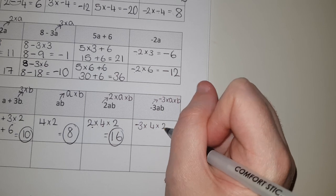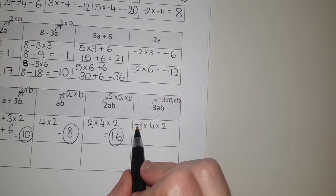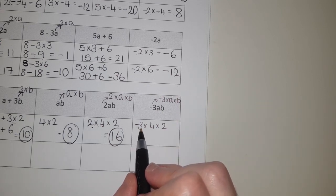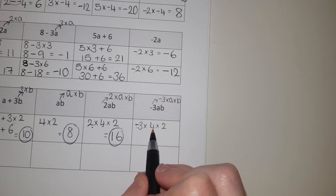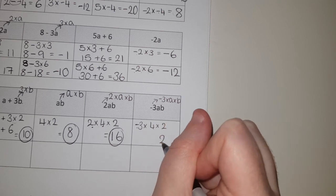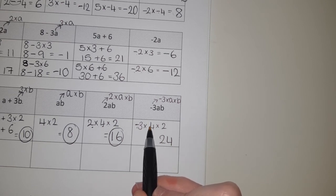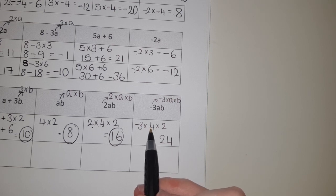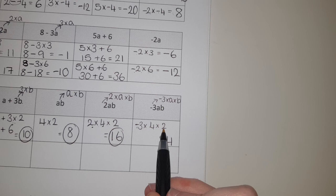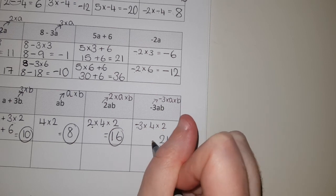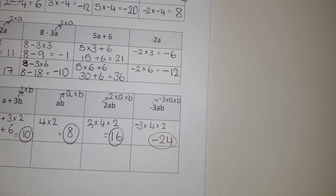So ignore the minus for a minute. Three times by four is twelve, and twelve times by two is twenty-four. And then if we think, a negative number times by a positive - well that's still negative, okay? Using our number rules we had at the top. And then if I do a negative times a positive, it still stays negative. So it's minus 24 is my answer.